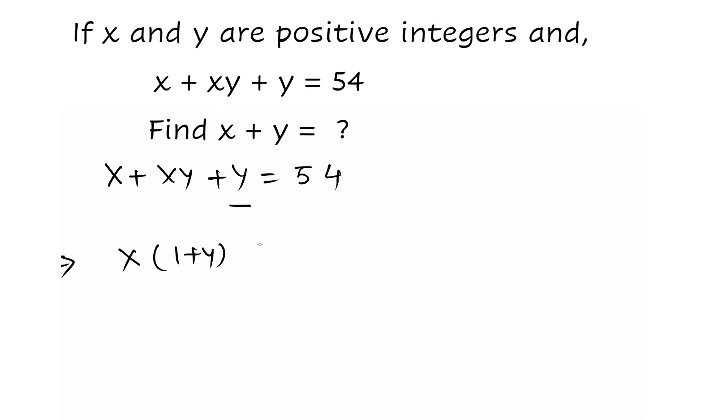Now we transfer the third term y to the right hand side, this becomes 54 - y. Now we transfer 1 + y to the right hand side, this goes to the denominator and we get x = (54 - y)/(1 + y).